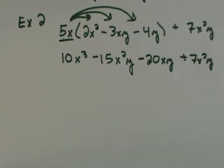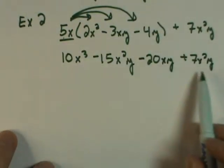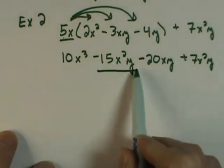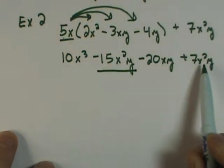The next step is to look for any common terms, or like variables. I combine my like variables. I see that this negative 15x squared y would match up with this 7x squared y because they have the same label or same variables.